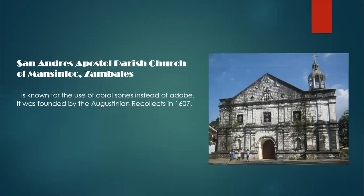The next one is the San Andres Apostol Parish Church of Masinloc, Zambales. It is known for the use of coral stones instead of adobe. It was founded by the Augustinian Recollects in 1607. The church structure is a standout among Spanish-era churches in the Central Luzon region for having been built with coral stone. It has saints' niches, vertical windows, curved niches of the town's patron saint, and carvings of geometric shapes and medallions on the pediment. Its belfry is designed like a circular temple with lantern and cross.